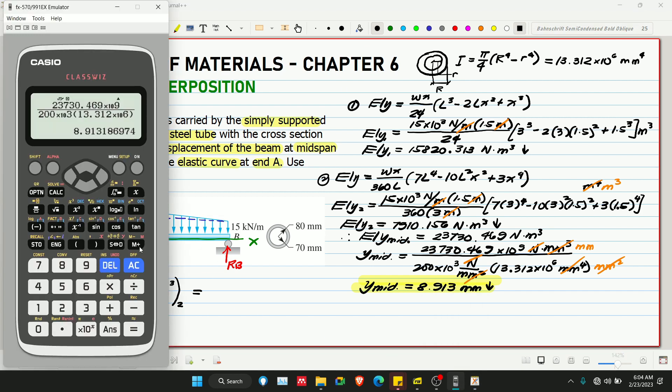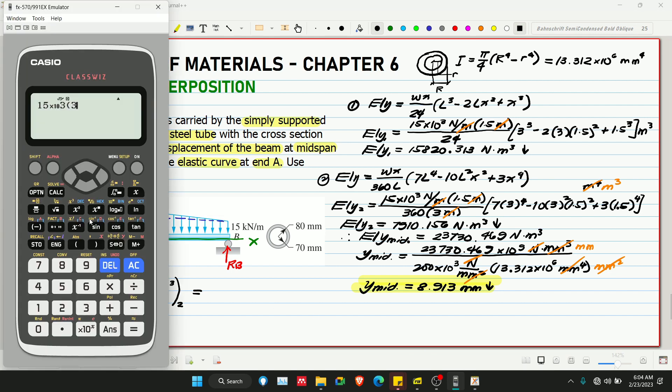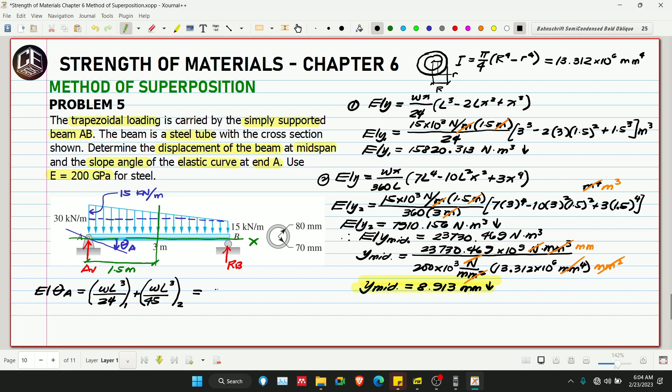The rectangular load effect on slope is clockwise, and the triangular load effect is also clockwise, so we add them together. W is 15 times 10 to the 3 multiplied by L cubed, which is 3 cubed, over 24, plus 15 times 10 to the 3 multiplied by L cubed over 45. This equals 25875 newton meter squared.